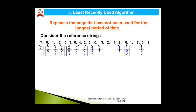To find the victim page in LRU, we scan the reference string in the backward direction — the opposite of Optimal page replacement. We scan backwards to identify which of the pages in {7, 0, 1} was used least recently (i.e., the earliest in the past). Scanning backward, page 7 was used the longest time ago. So page 7 is the victim and is replaced by page 2.